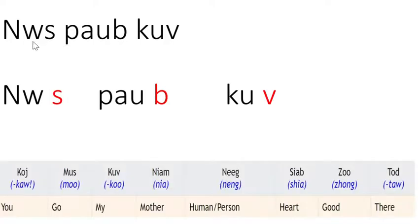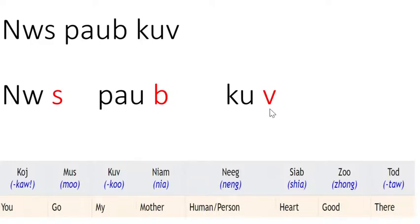Mong — you pronounce nyu, pao, gu. You have a tone indicator. Nyu is a down tone. Pao is very high tone. Gu is a little bit long tone. Nyu, pao, gu. So, tone indicator.